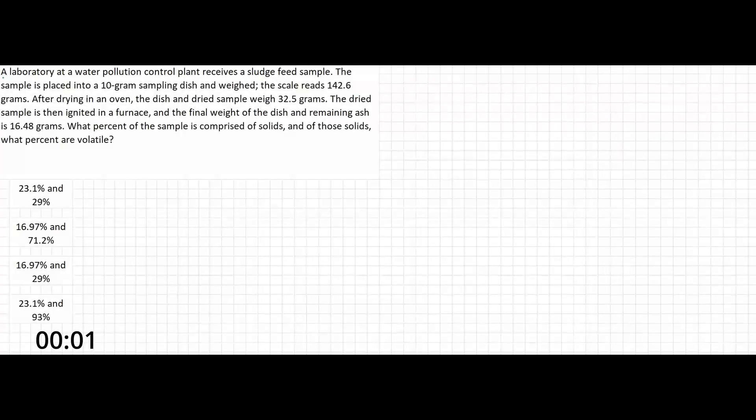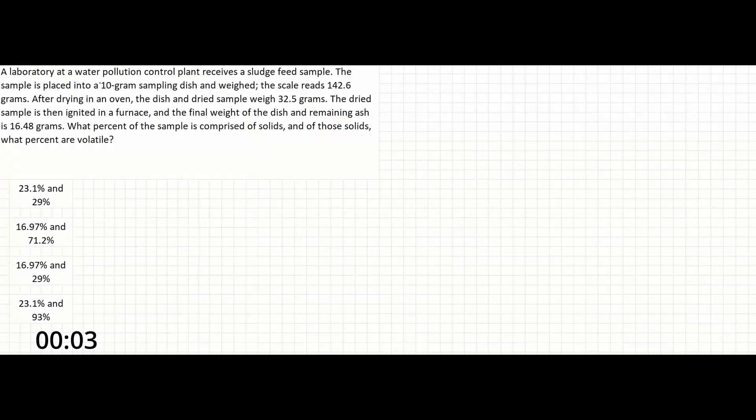In this problem, a laboratory at a water pollution control plant receives a sludge feed sample. The sample is placed into a 10 gram sampling dish and weighed. The scale reads 142.6 grams.